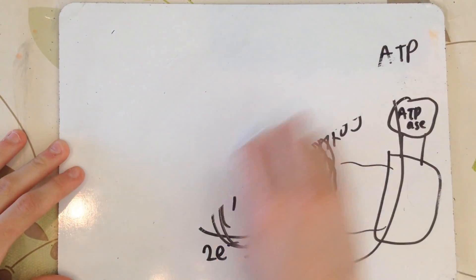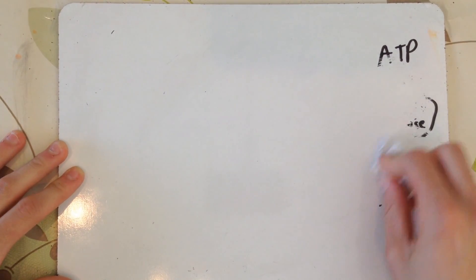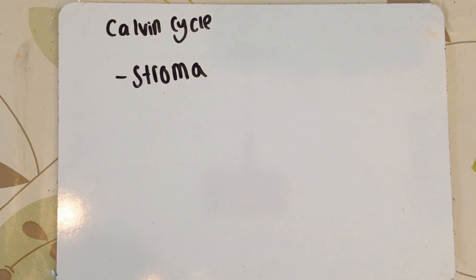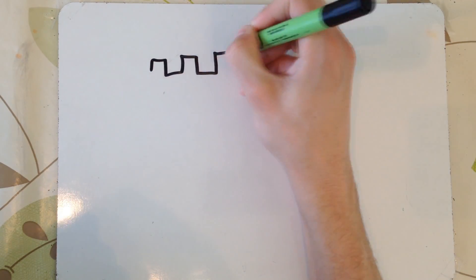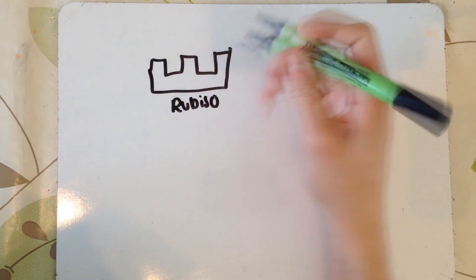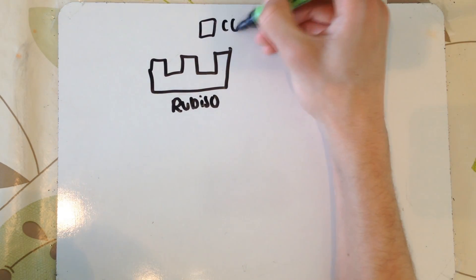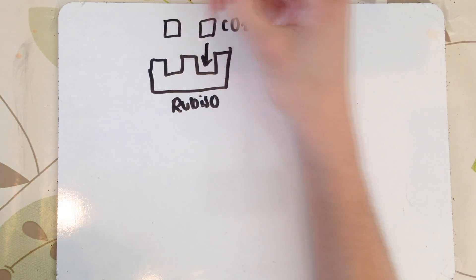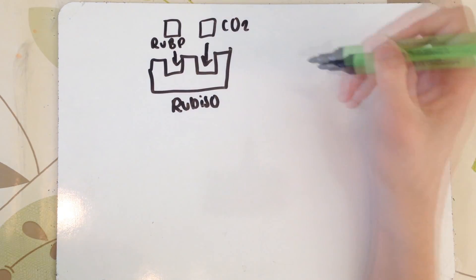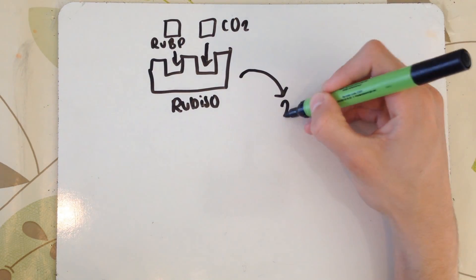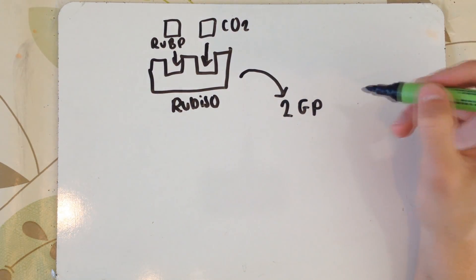Now the Calvin cycle, which occurs in the stroma. What happens is you've got your enzyme Rubisco, and this basically catalyzes a reaction between carbon dioxide that the plant has taken in through the stomata and something called RUBP, which we're going to generate shortly. The products of this reaction are 2-glycerate phosphate.